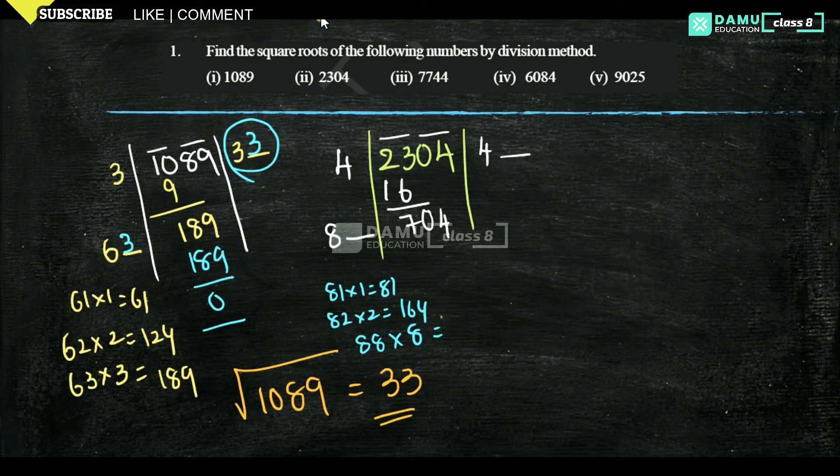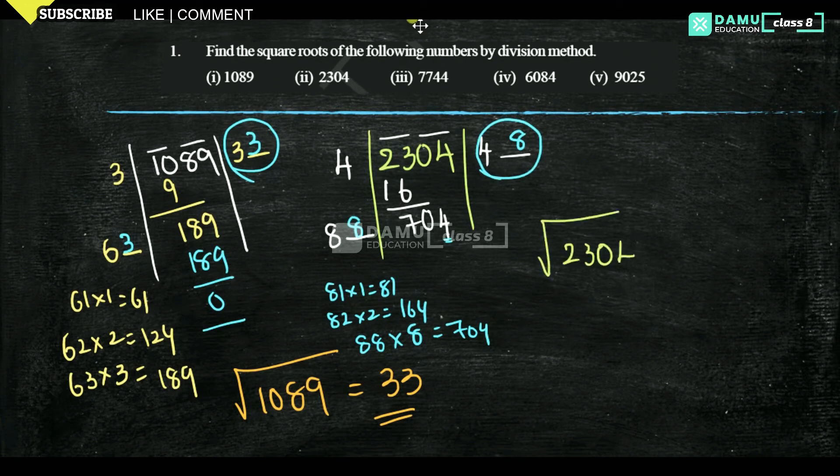88 into 8 is 64, right? Based on this you can check, 88 into 8 is 704. So here 8, here also 8, that means the quotient is 48. Square root of 2304 equals 48. Like that we need to do.